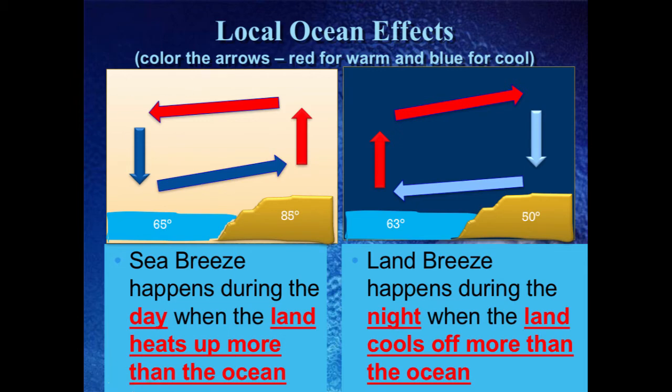During the day, because the land heats up faster, if you're standing on the coast anywhere in the world, the wind is always going to be blowing off the ocean toward the land — which is what we call sea breezes. If you've ever been to the beach, think about it: it's always windy, day, evening, afternoon, whatever. The reason is the unequal heating of the water and the earth.